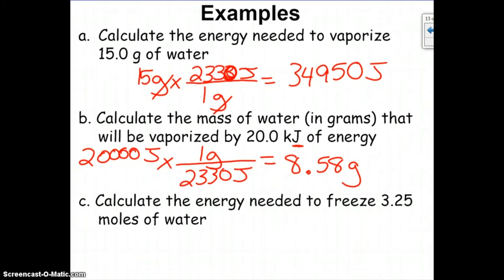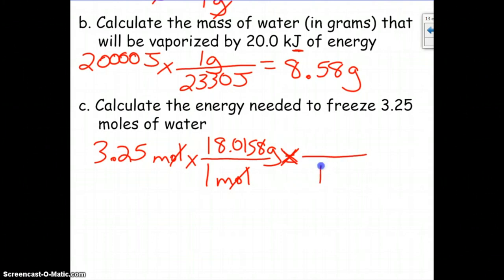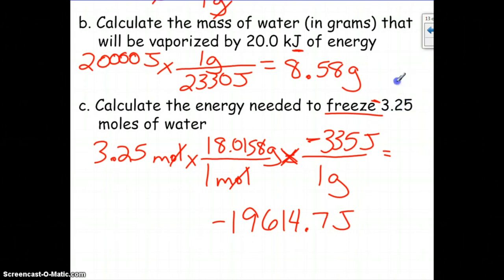The last one asks us to calculate the energy needed to freeze 3.25 moles of water. We're starting in moles, so that does give us one extra step because our conversion factor is in grams, so we'll need to put the molar mass of water on top so that we can get grams, and then we can set up our conversion factor. One gram will be on bottom. Now we're talking about freezing, so we're going to need the heat of fusion, but freezing is the opposite, so it's actually the heat of solidification. This is going to be negative, so it's going to be negative 335 joules. Then you're going to multiply across, and you will lose 19,614.7 joules to freeze 3.25 moles of water.